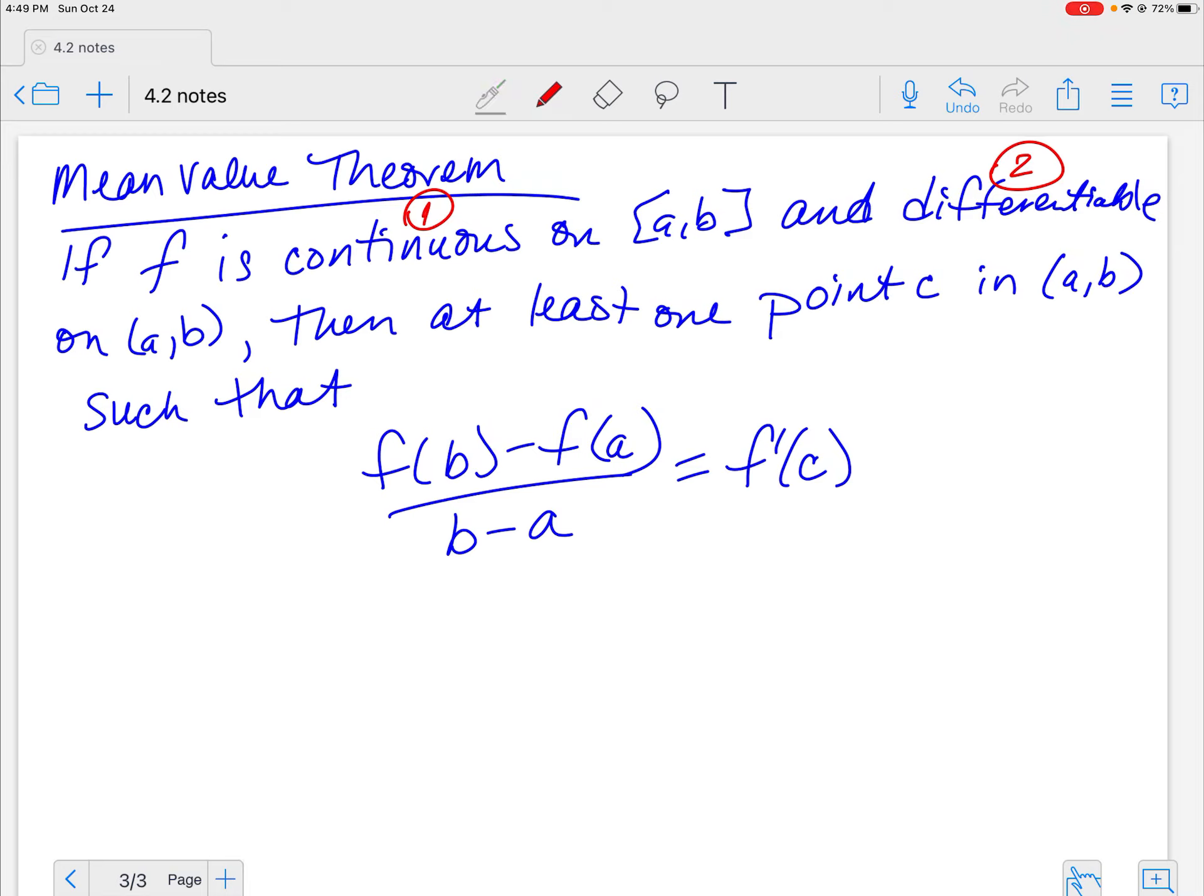All right, so what this is saying is I have this part. Tell me what that looks like. It looks like a slope, right? And it is. So I'm saying this over here is the secant slope is equal to this, which is what? What's a derivative again? That tangent slope. So I'm saying there is, if this function is continuous and differentiable on this interval, then somewhere my secant slope and my tangent slope are equal.